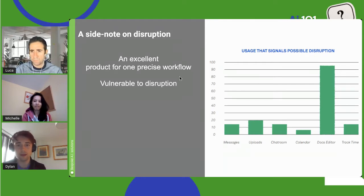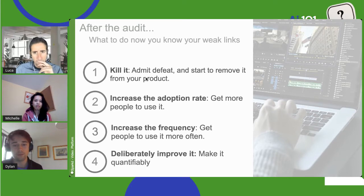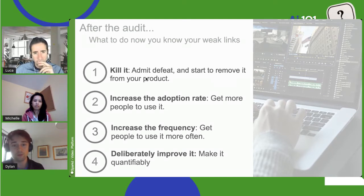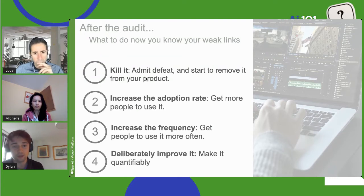Once we've done this audit and understand how our clients are using the product and in what proportions, we have to make decisions about features getting limited adoption. There are four options: first, kill it — remove it; second, increase the adoption rate — get a higher percentage of the user base to use it; third, increase the frequency — get those who use it to use it more; and fourth, improve it — make a qualitative and measurable change to the feature itself.